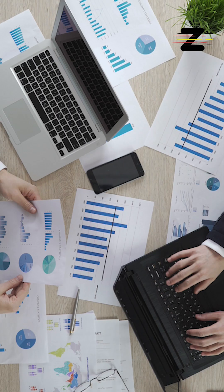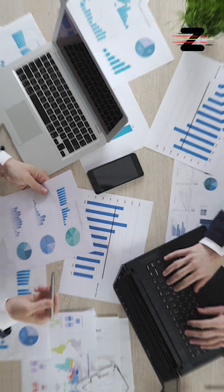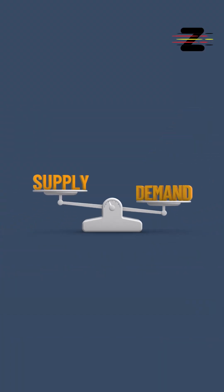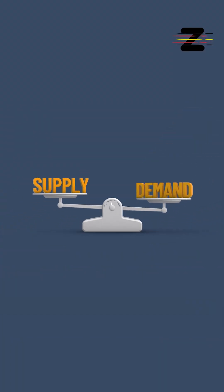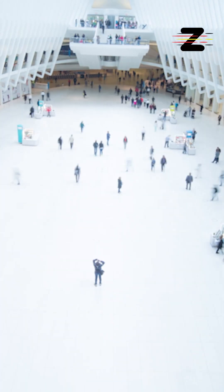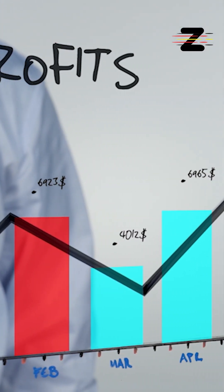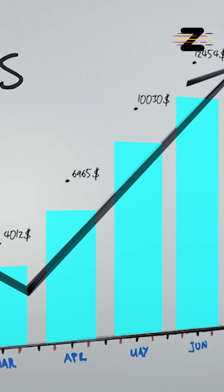To avoid this problem, companies can work on creating a more efficient and balanced supply chain. By doing so, they can ensure that customers can always find what they need, while also reducing costs and improving profitability.